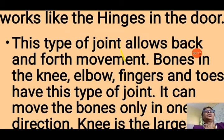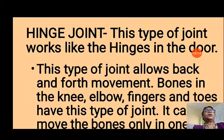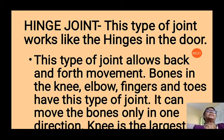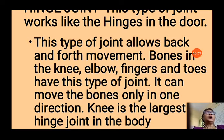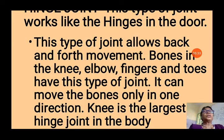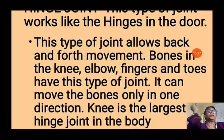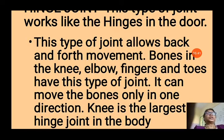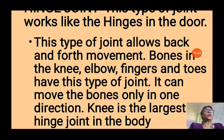Next is the hinge joint. You have seen the hinges of a door — this joint works like the hinges of a door. This type of joint allows back and forth movement only. Bones in the knee, elbow, fingers, and toes have this type of joint. It can move the bone only in one direction. Like your elbow, you can move it in only one direction. The knee is also the largest hinge joint, and you can move your knee in one direction only.